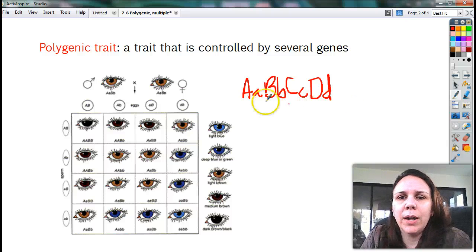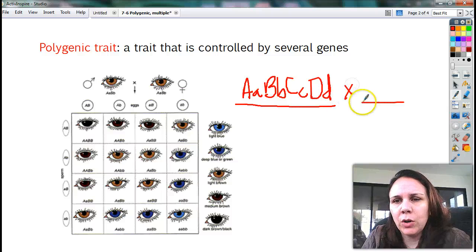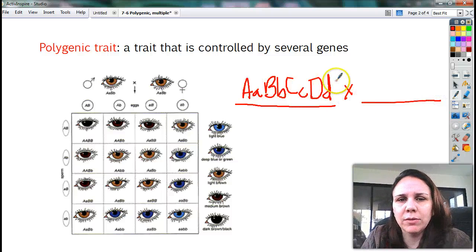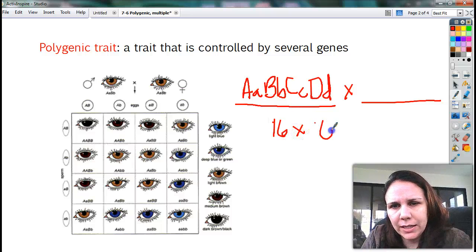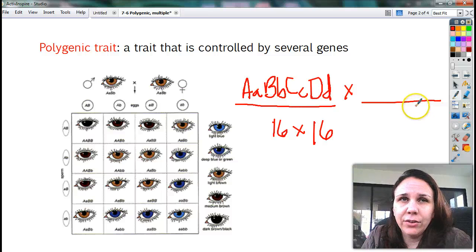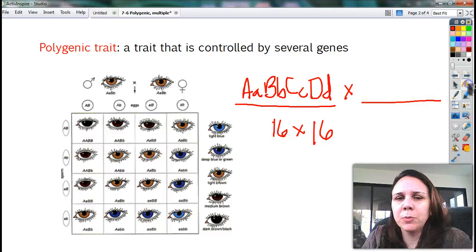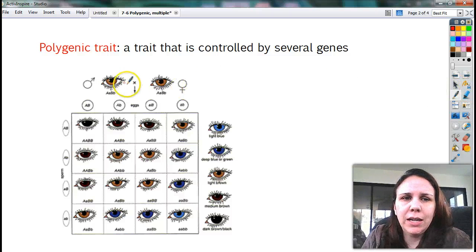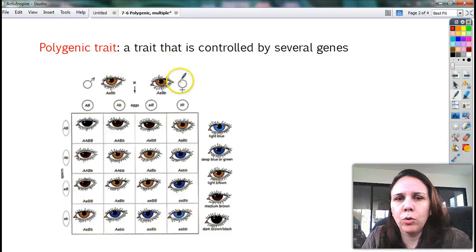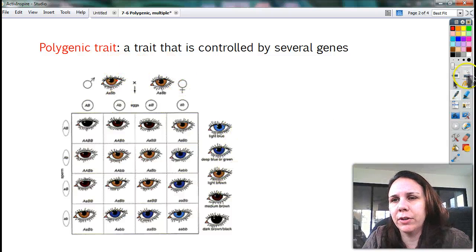But imagine that you had a cross with someone with this genotype, cross with someone else with the same genotype. How many different possible combinations could you get out of that? Well, let's see. I think it would be a 16 by 16 square. And there's a lot of different color combinations you can get for that. So polygenic traits, like I said, much more difficult to figure out because of the fact there's just so much variability in between. You're not either hazel or brown or brown or blue, as you can see, lots of different combinations.